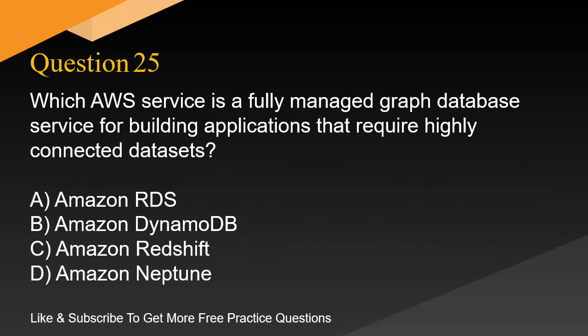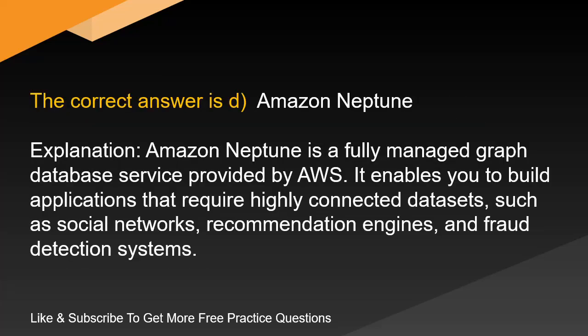Question 25. Which AWS service is a fully managed graph database service for building applications that require highly connected datasets? The correct answer is D: Amazon Neptune. Amazon Neptune is a fully managed graph database service provided by AWS. It enables you to build applications that require highly connected datasets, such as social networks, recommendation engines, and fraud detection systems.